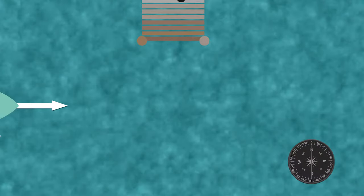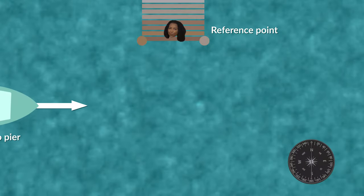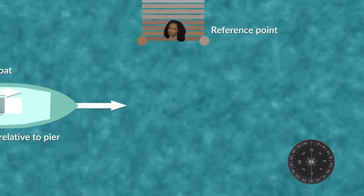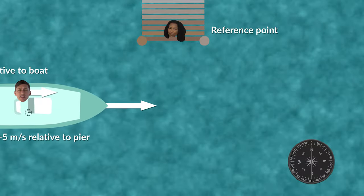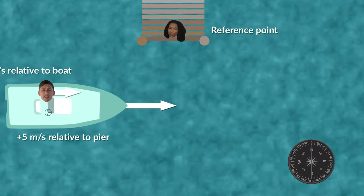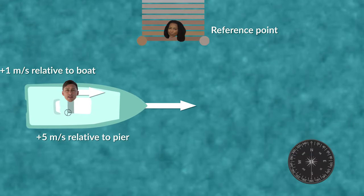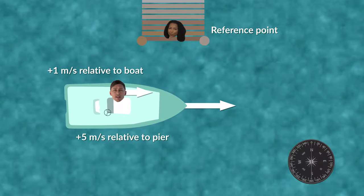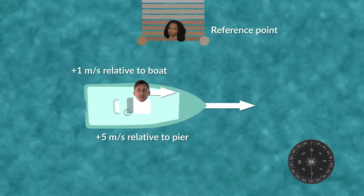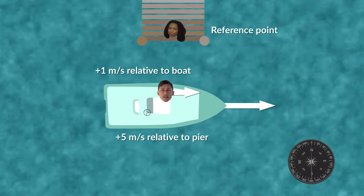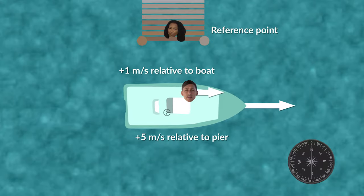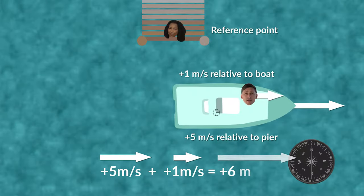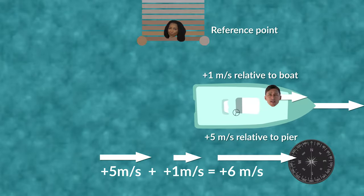Our frame of reference is someone looking at the boat from the pier. The boat's velocity vector shows that it is moving at 5 meters per second in the positive direction. I'm on the boat moving in the same direction at 1 meter per second — we can see my velocity vector as well. To calculate my velocity relative to someone standing on the pier, all we have to do is add my velocity vector to the boat's velocity vector. 5 plus 1: my velocity relative to the pier is 6 meters per second in the positive direction.